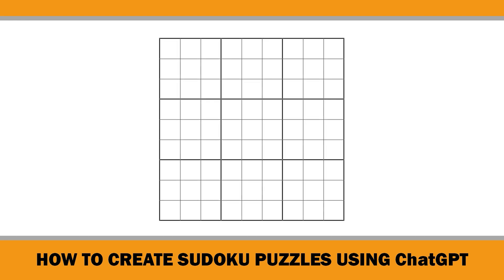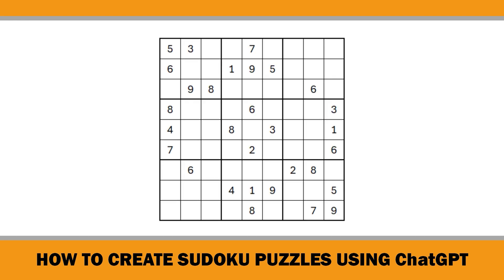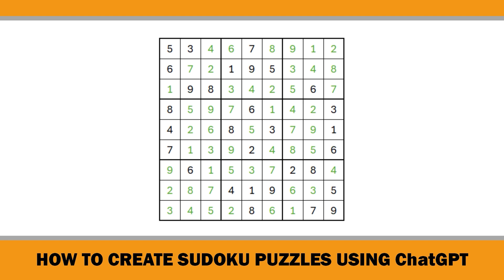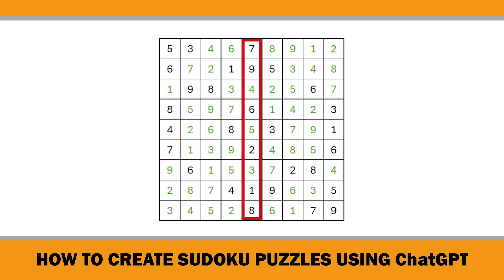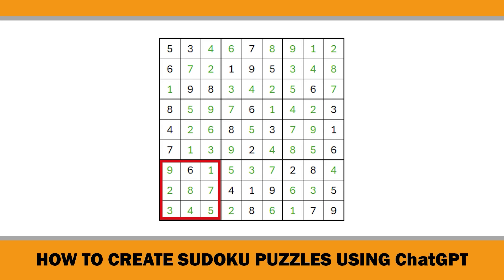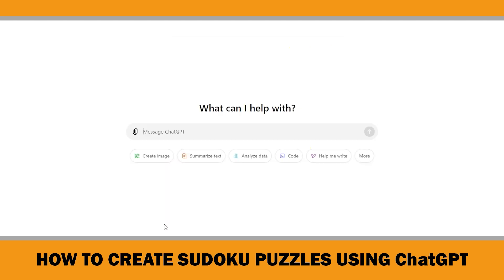Sudoku is a classic logic-based number puzzle. The goal is to fill a 9x9 grid with numbers so that each row, column, and 3x3 subgrid contains all digits from 1 to 9 without repeating. Let's walk through the steps to generate your own Sudoku puzzle.